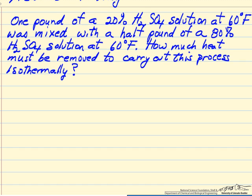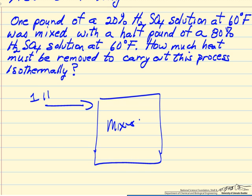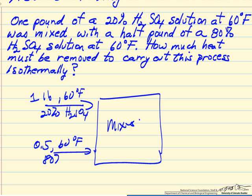And so the process that we're looking at is we have some mixer where we have one pound, it's at 60 degrees, and it's 20% sulfuric acid. And we have a half pound also at 60 degrees, and it's 80% sulfuric acid. So it means we have 1.5 pounds.